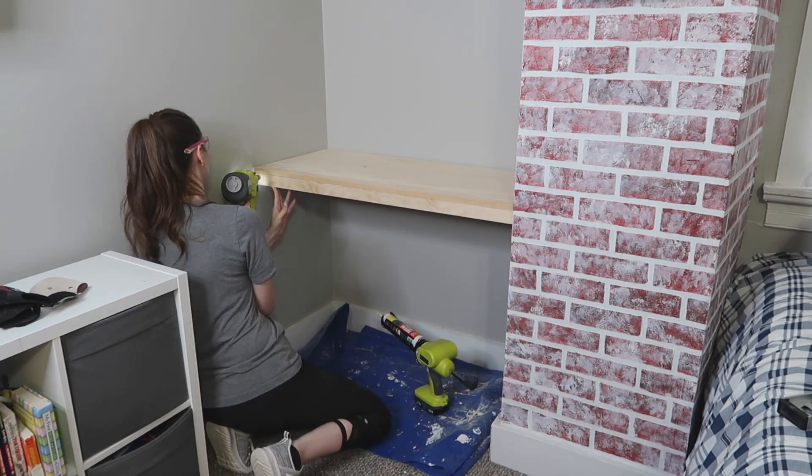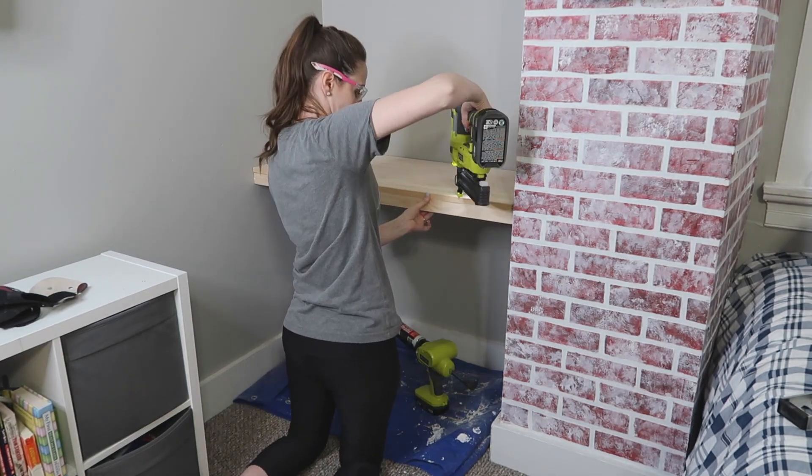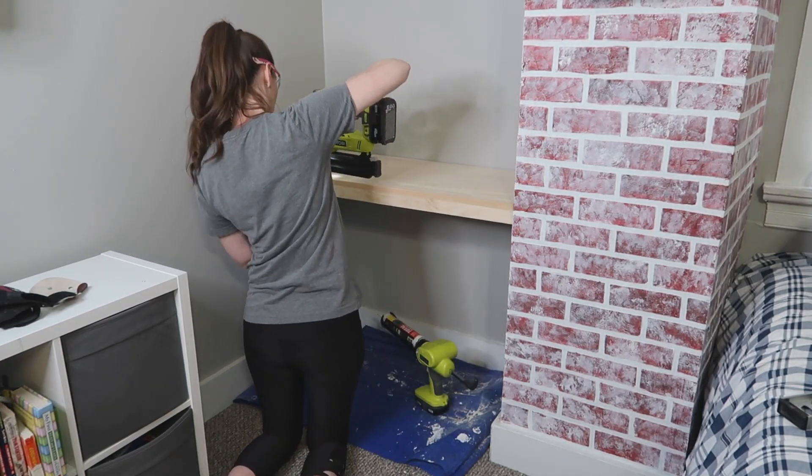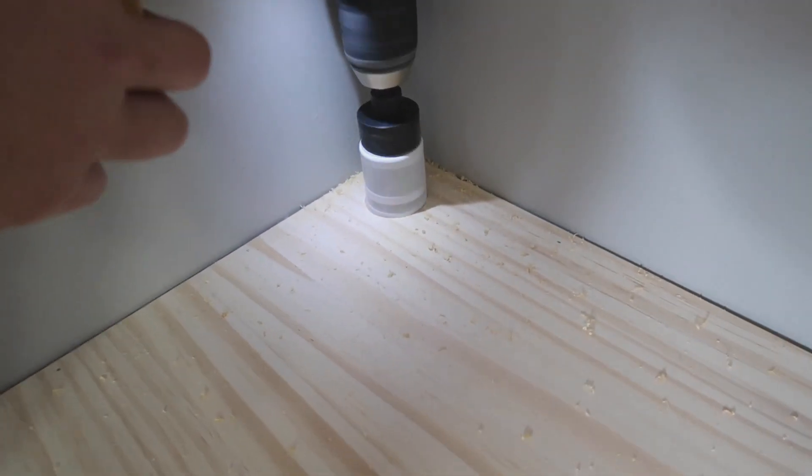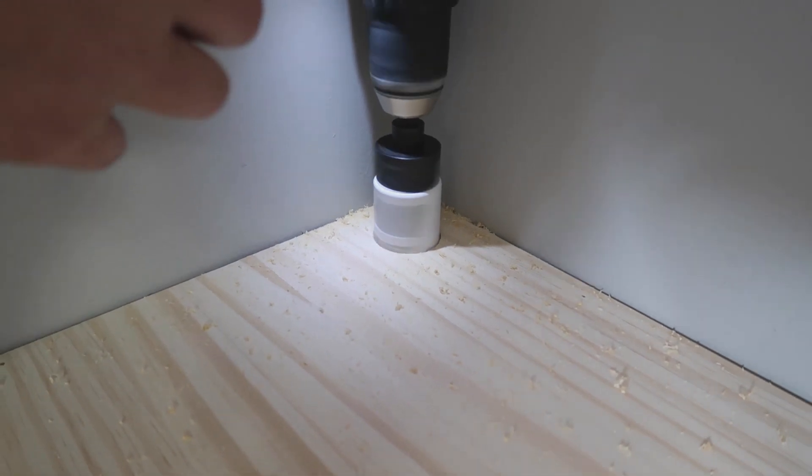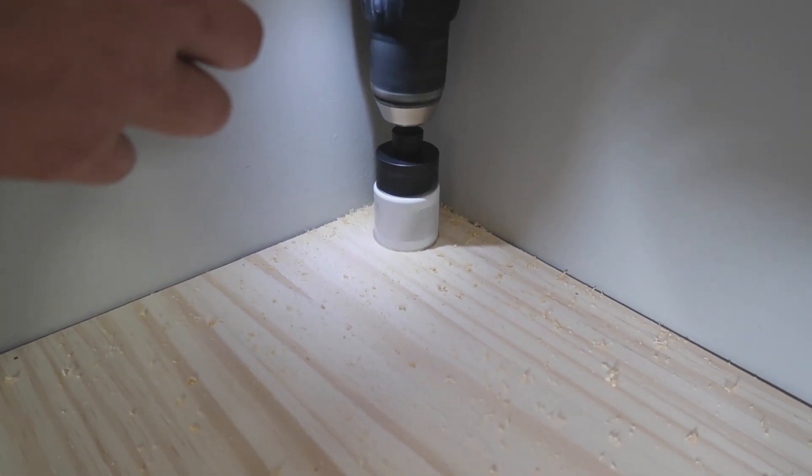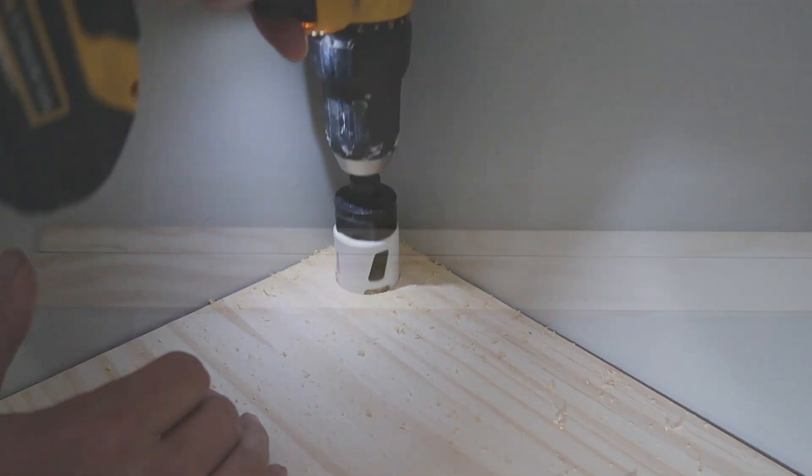So now you can see we have a desk finally forming. But before we get into any of the finishing work, we did go ahead and drill a hole in the back left corner that's going to allow for cords to slide through. We just have a lamp right now, but in the future if he ever gets any type of computer thing, something like that, then we'll have space to feed those down into.